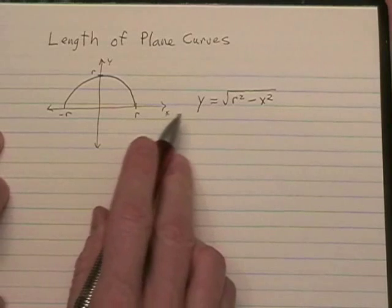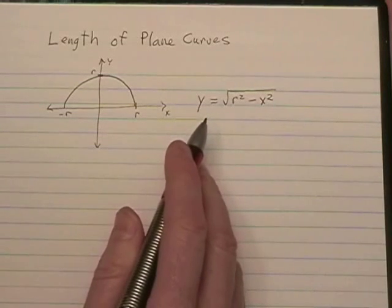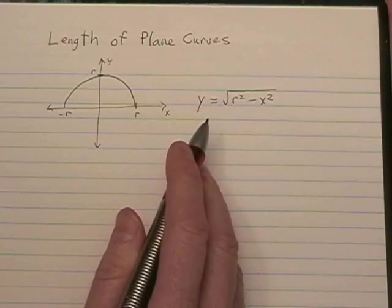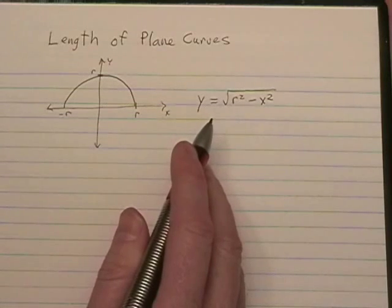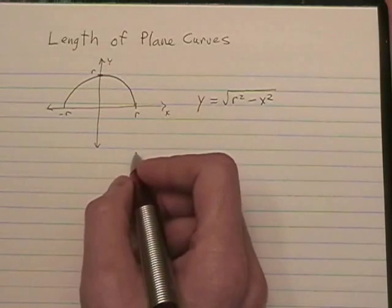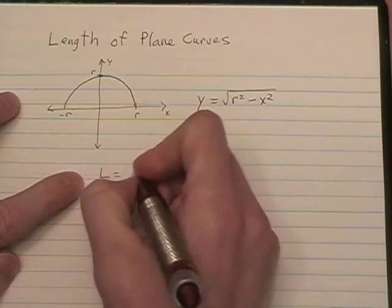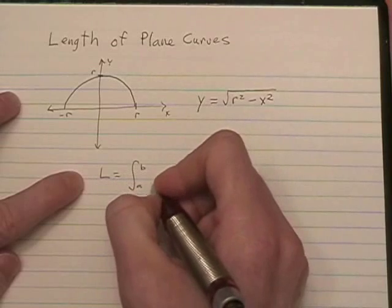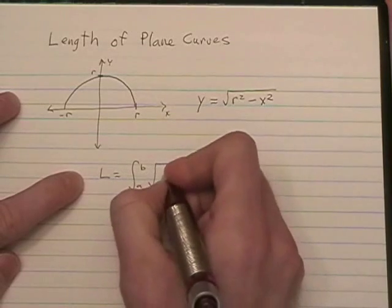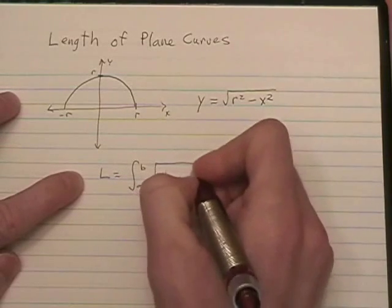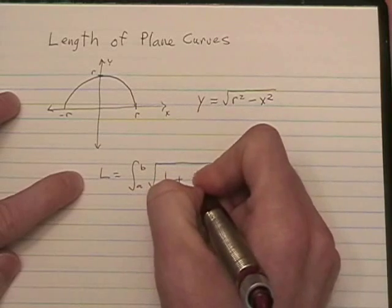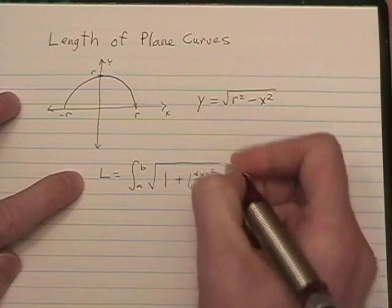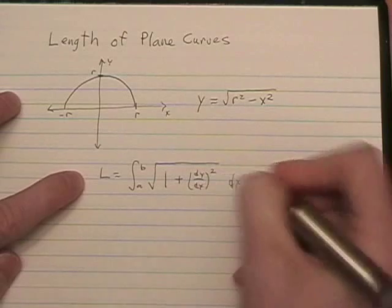Okay, so we're going to go right to the formula for the lengths of plane curves, which is L equals the integral from a to b, the square root of 1 plus the derivative squared, dx.